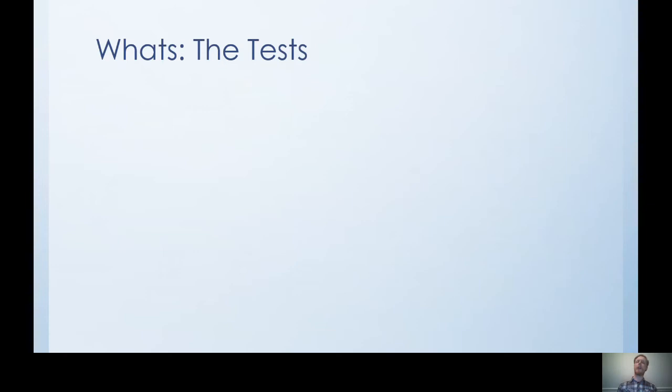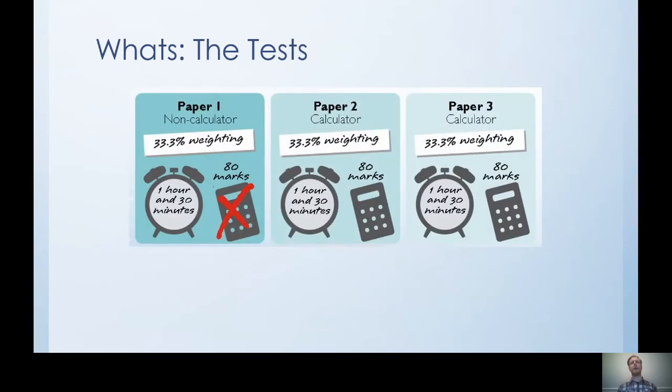So at the end of year 11 you will have three papers. Each one is an hour and a half long, each one is 80 marks. The first paper is non-calculator and paper two and three are both calculator papers. Do we know what's on each paper? No, it could be absolutely anything from your two years worth of study. It's not like you have an algebra paper and a data and shape paper, any topic could be on any paper so there's no guidance on that so you need to be revising everything for these papers.